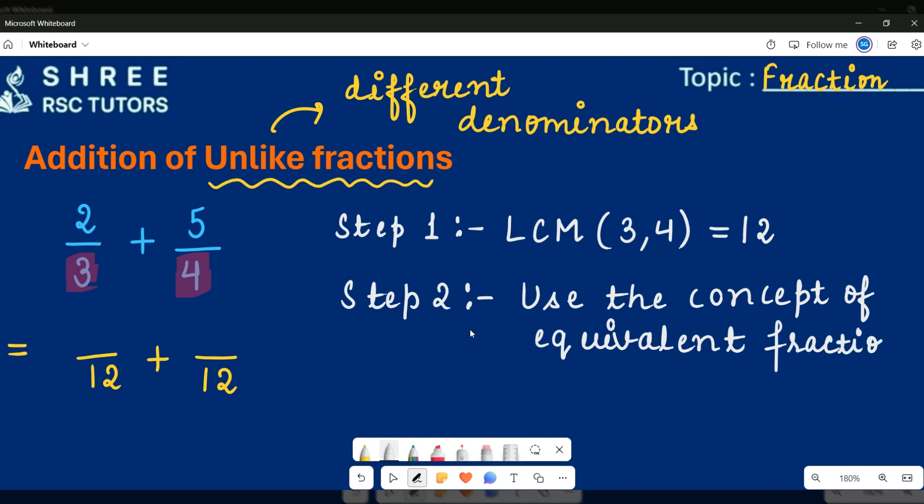Basically, the rule is very simple. First of all, you were having three before, right? But now somehow you are getting this 12. What you must have done with the three to get this 12. We all know that if we multiply this 3 by 4, you will get this 12. Now, according to the rule of equivalent fraction, whatever you do with the denominator, you have to do the same thing with the numerator as well.